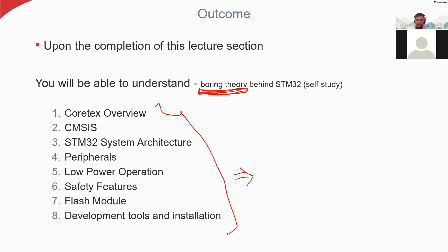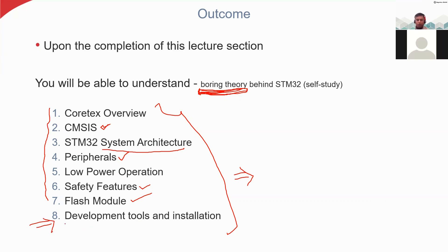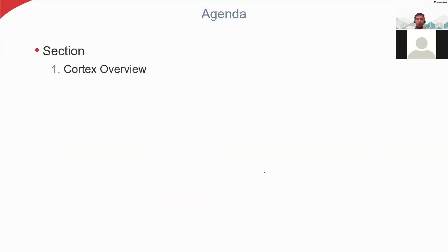The topics we are going to see now: the Cortex overview, then CMSIS — what it means and what is the use of this international standard — and the specific architecture of STM32, that is the system architecture. We will see what peripherals are available in STM32, how it performs low power operation, some safety features, and a little detail about the flash module. After all seven topics, we will finally see development tools and installation — what tools you can use to develop microcontroller programming and applications.